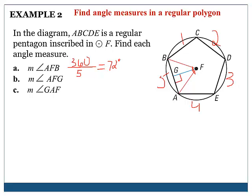For part B, we are finding angle AFG. The apothem cuts our triangle in half, so our full central angle of 72 degrees gets halved. We do 72 ÷ 2 = 36 degrees. Both of the split angles are equal to 36 degrees.